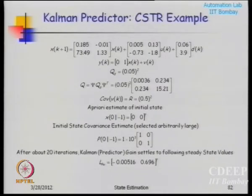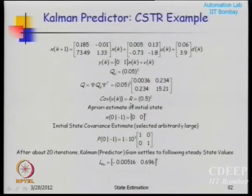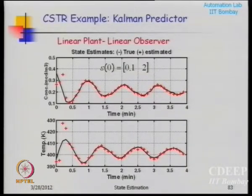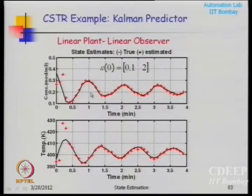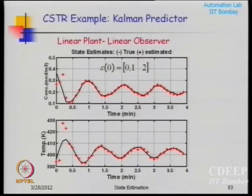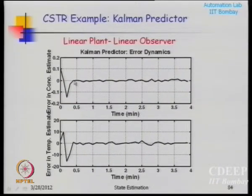For the CSTR reactor example, I have developed a Kalman predictor. The steady-state predictor estimates concentration from temperature. Very quickly the observer error goes to 0. Since this is simulation, I can compare the truth with the estimated value — the estimated concentration and the true concentration are almost sitting on top of each other. The initial error is large but then it converges, giving a zero-mean error and a mean value estimate.